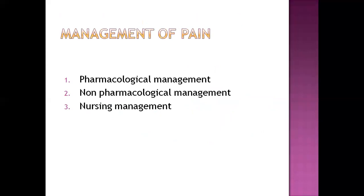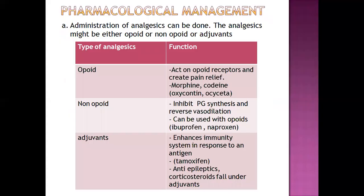Management of pain begins with pharmacological management by providing medicine. We can give opiates, non-opiates, and adjuvants. Opiates create pain relief by acting on opiate receptors of the body, whereas non-opiates inhibit prostaglandin synthesis, which reverses vasodilation. Adjuvants enhance the immune system response to antigens. Adjuvants are medicines used more commonly on a daily basis, whereas opiates and non-opiates are not given so casually.